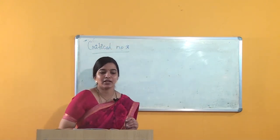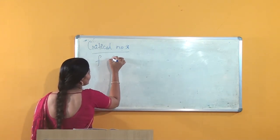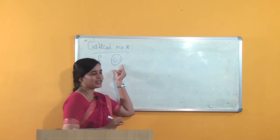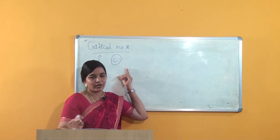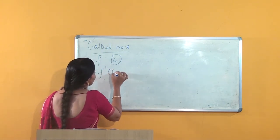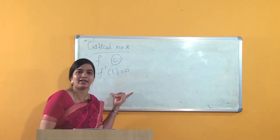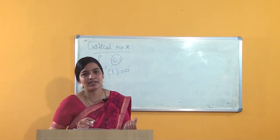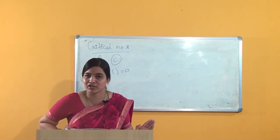Critical numbers: a function f is said to have critical number c when f'(c) is equal to 0, or f'(c) does not exist at that point c — then we say that c is the critical point. Remember, c should be in the domain of the function f.